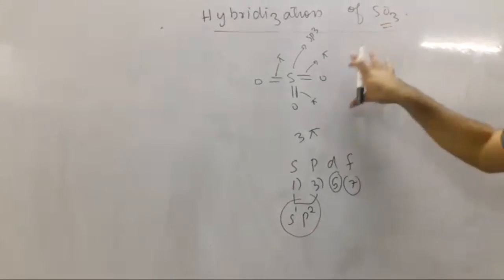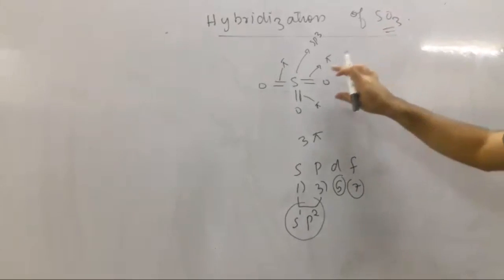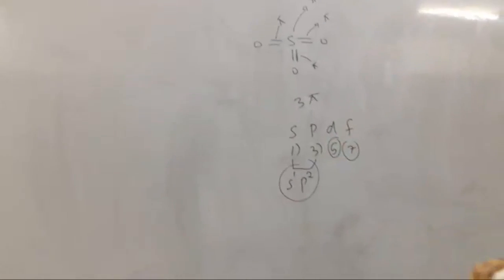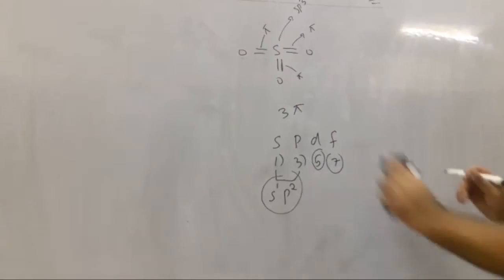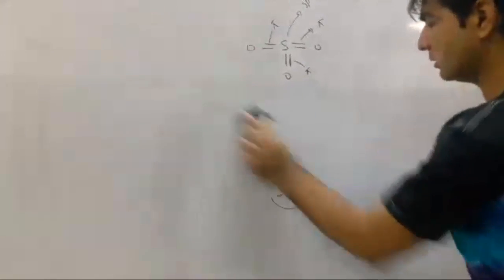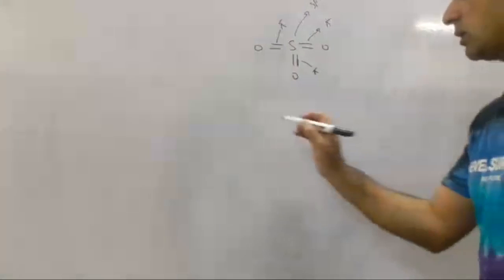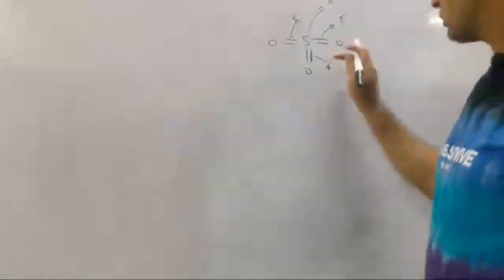This is a very easy way if you know the structure. If you know the structure, you can know the hybridization very easily. The second way is if you want to know the hybridization, what do you have to do?